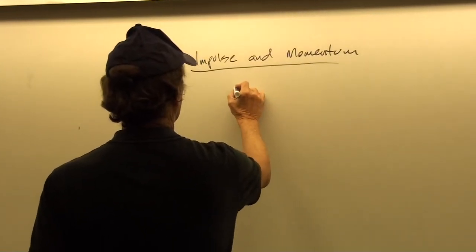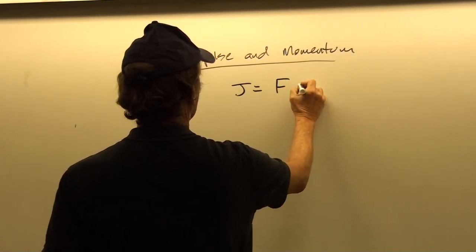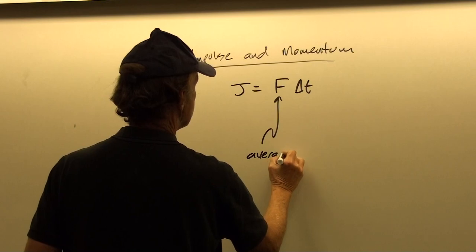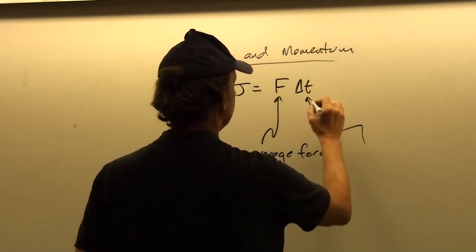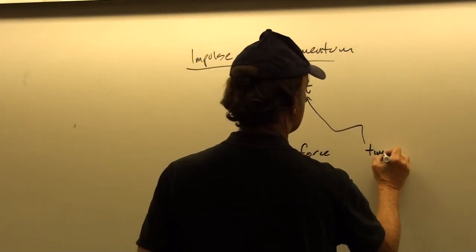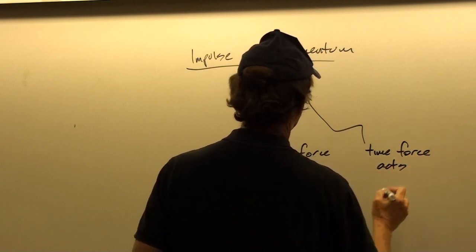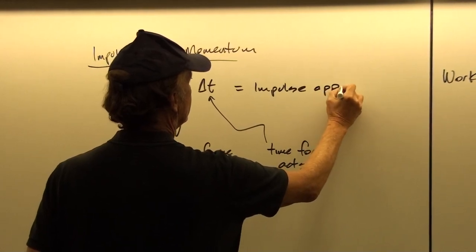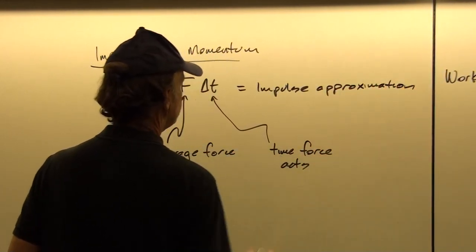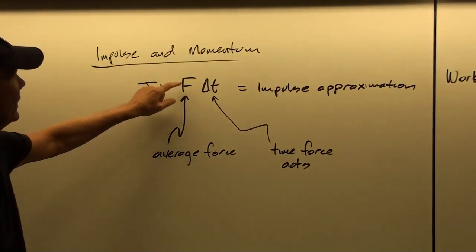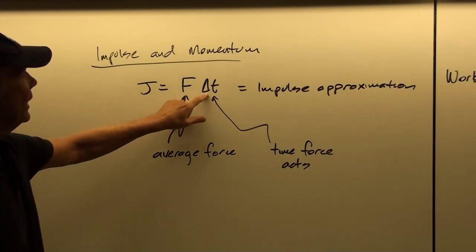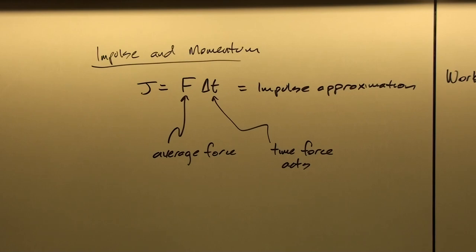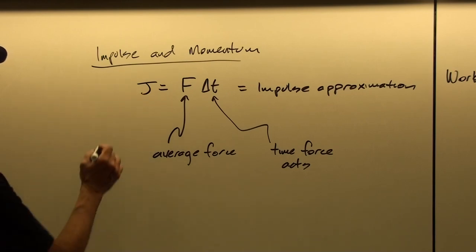But what if we have a time-dependent force, F of t? We define the impulse then as being a force through a time, where F here is the average force and delta t is the time over which the force acts. This is often called the impulse approximation, because what we're doing is saying that even though the force might not be constant at all times over which it's acting, the average force multiplied by the time will give rise to what we call the impulse.